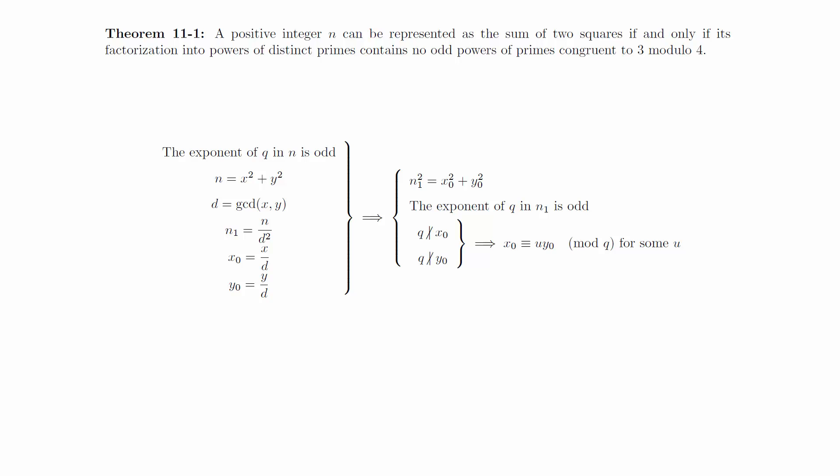This implies that there exists a u such that x₀ is congruent to u times y₀ mod q. After substituting we get that q must divide 1 plus u squared times y₀ squared. Since we've already shown that q does not divide y₀, we must have that q divides 1 plus u squared.